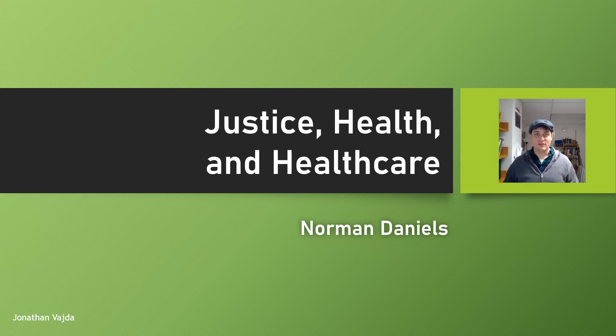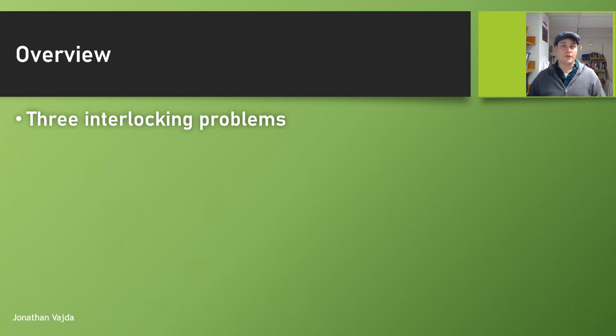Hello and welcome. My name is Jonathan Vida and in this video we're going to be looking at Justice, Health and Health Care by Norman Daniels. He's going to argue roughly that if we're going to have a fair society, health care needs to be available to all its citizens. Here's an overview of what we're going to be covering today: first, we're going to talk about three interrelated or interlocking problems and some questions that Daniels seeks to answer in his article.